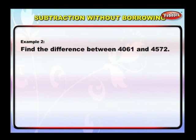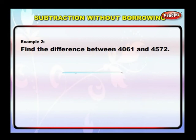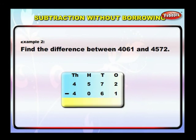Example 2: find the difference between 4061 and 4572. Here both the given numbers have the same four digits; their digits at the thousands place are the same. So find out the greater number by comparing the hundreds place. 5 is greater than 0, so 4572 is greater than 4061. Now arrange them in a column.